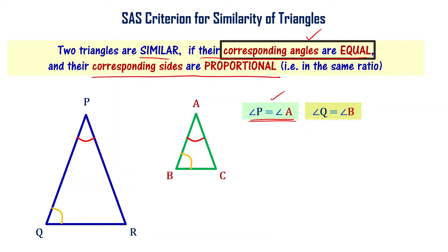Two of the angles of triangle PQR are equal to two of the angles of triangle ABC. Therefore, I can say that the third angle is automatically equal — angle R is going to be equal to angle C, because the sum of the angles in a triangle is equal to 180 degrees.